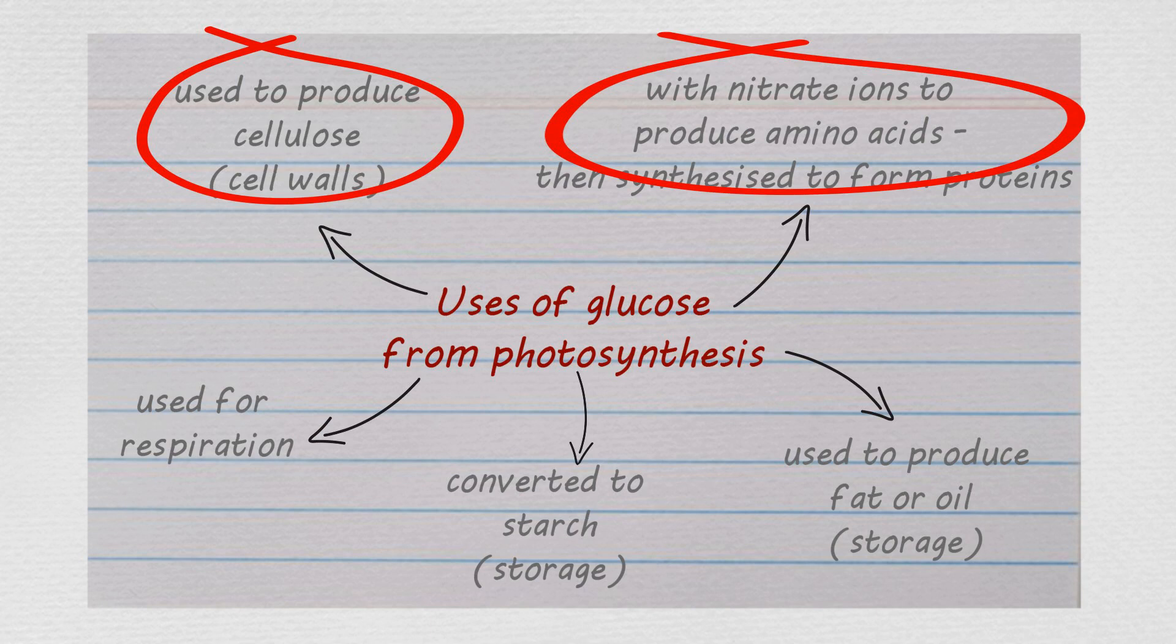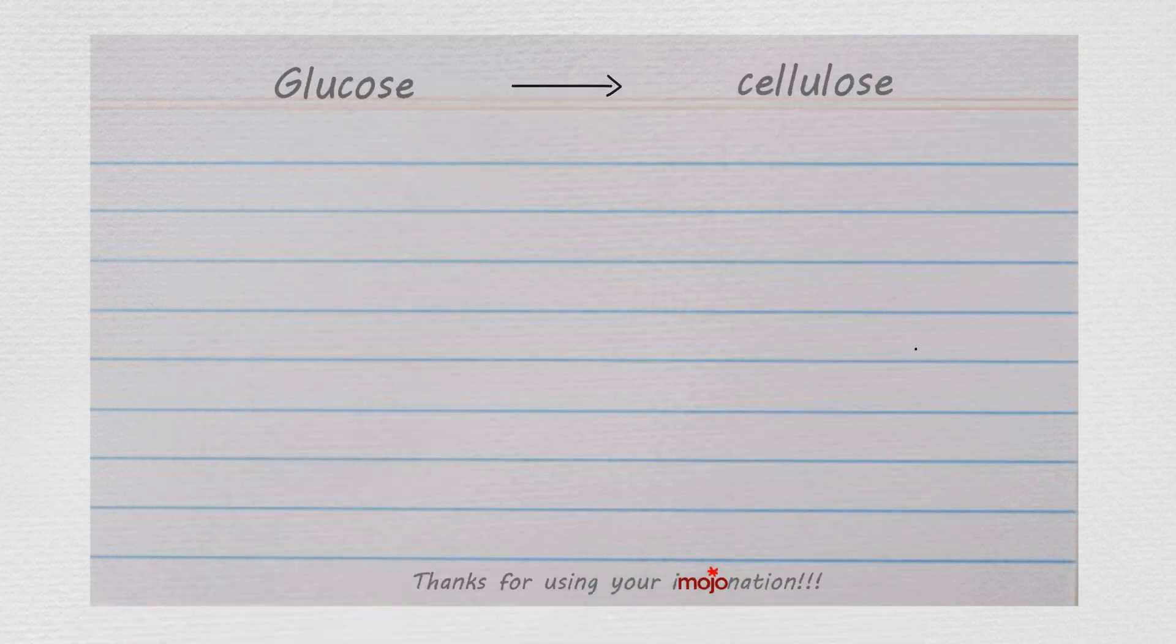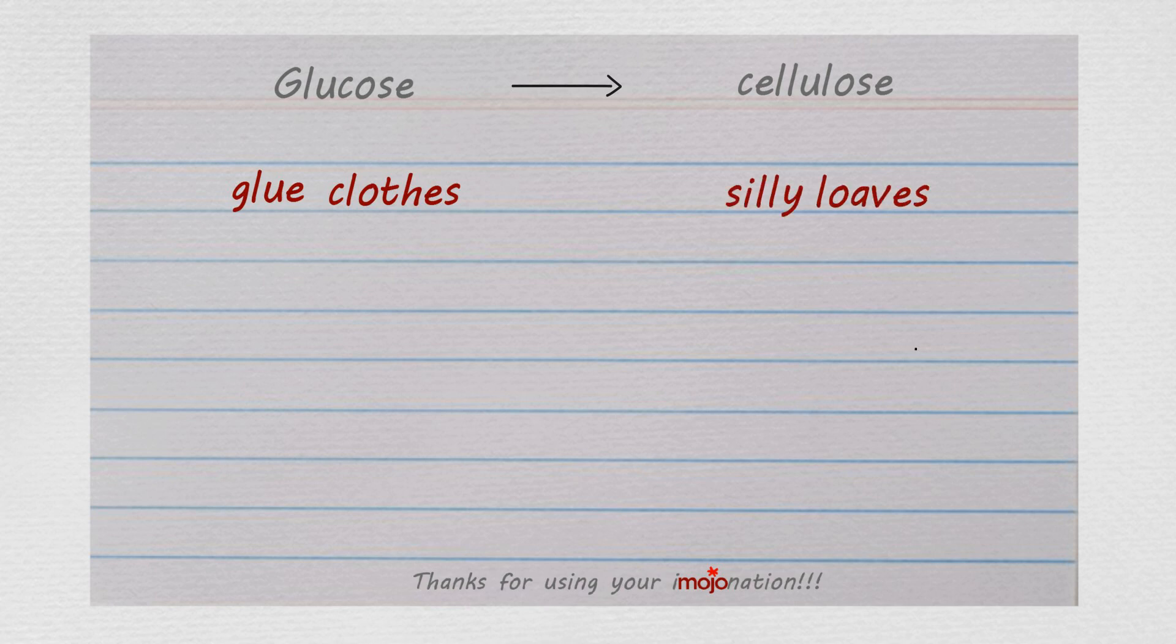So let's get started. Glucose may be converted into cellulose. For glucose we think glue clothes, clothes covered in glue, and for cellulose we think silly loaves, daft bread.